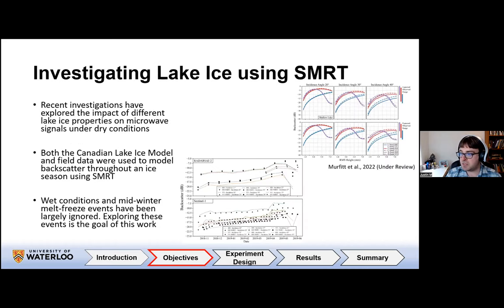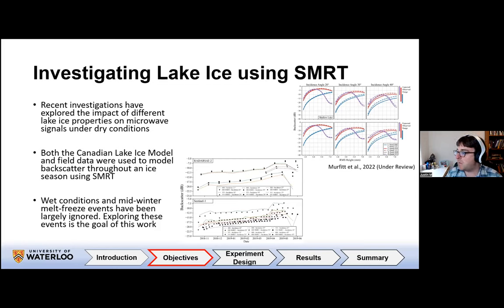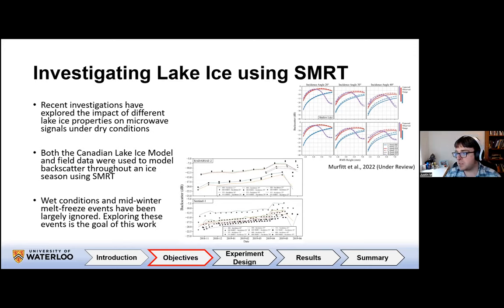The Python library allows us to access numerous electromagnetic models and microstructure models, as well as incorporating both snow and ice layers. To date with SMRT, we've done fairly extensive explorations on the impact of different properties: ice thickness, roughness of different interfaces including root mean square height and correlation length. We've also been able to reproduce backscatter throughout an ice season using both field data and output from the Canadian lake ice model CLIMO, integrating CLIMO with SMRT to bring simulations more in line with reality.